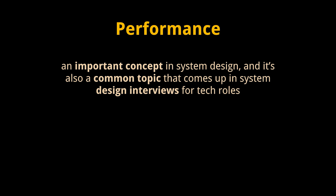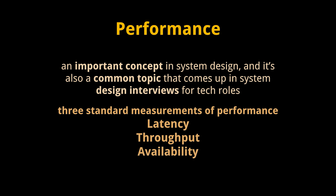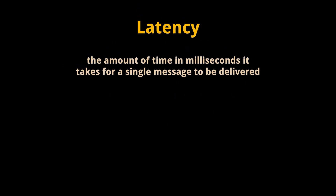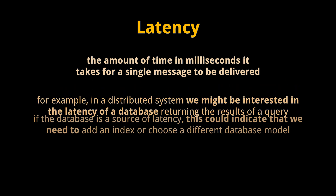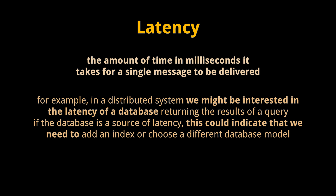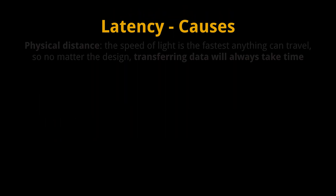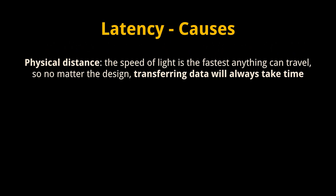Performance is an important concept in system design and a common topic that comes up in system design interviews. In the second part of this video, we'll go over three standard measurements of system performance: latency, throughput, and availability. Latency is the amount of time in milliseconds it takes for a single message to be delivered. The concept can be applied to any aspect of a system where data is being requested and transferred. For example, in a distributed system we might be interested in the latency of a database returning the results of a query. If the database is a substantial source of latency, this could indicate that we need to add an index or choose a different database model.